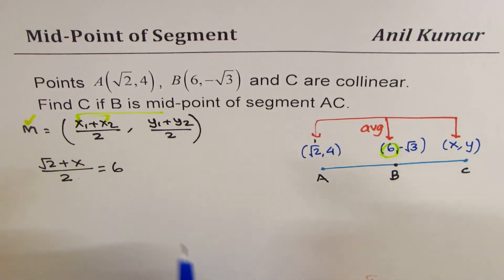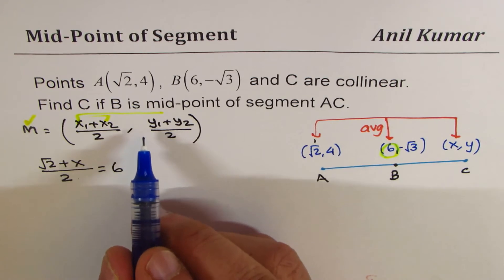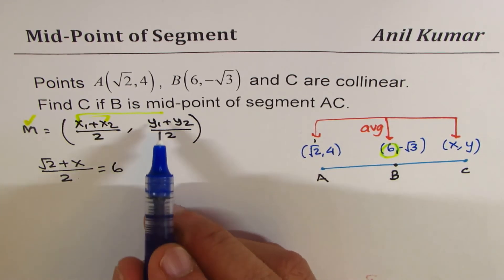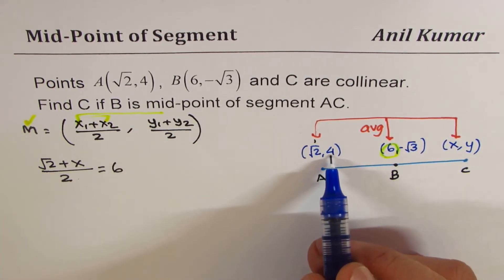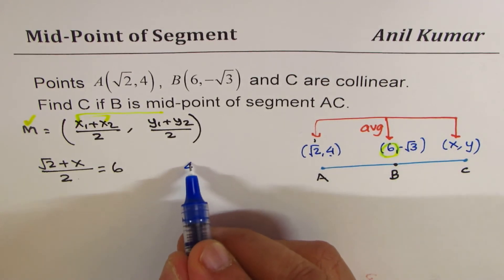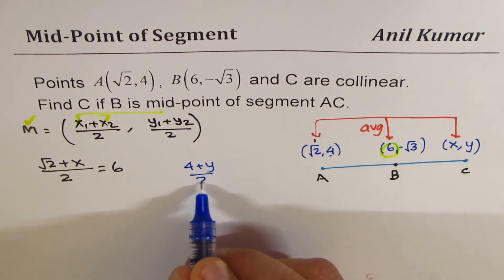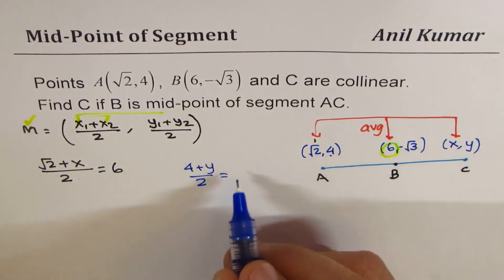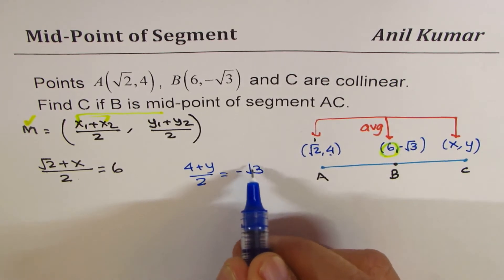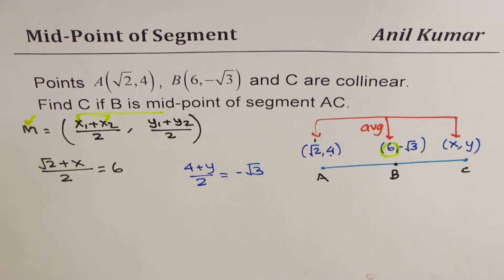Then I will use this formula: (y₁ + y₂), that is (4 + y)/2, should be equal to the y value which is -√3. Is this step clear to you? That is most important. I'd like you to pause the video, understand this step, and then we'll move forward and solve both sides.